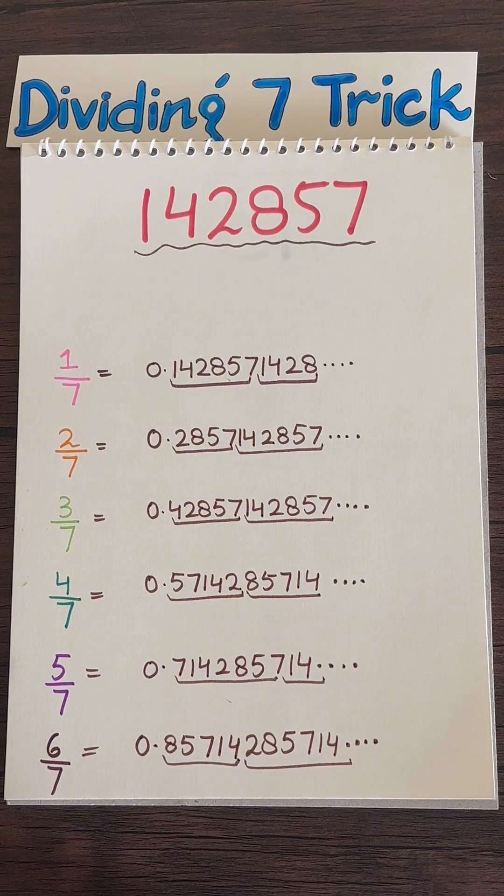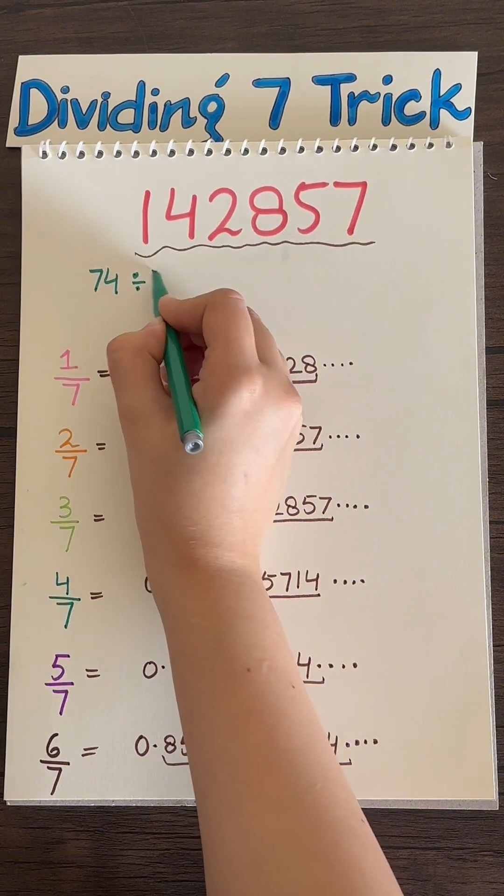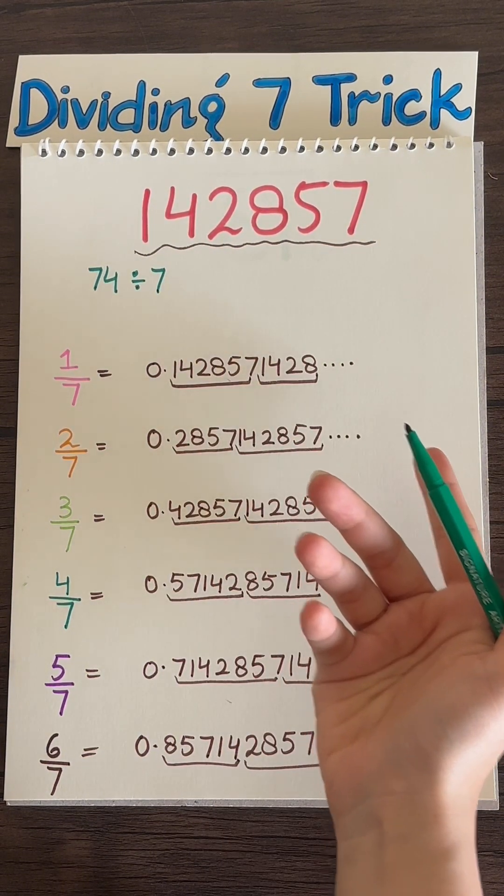Just remember where in the sequence the decimal part starts and you will be good to go. So if you take a number like 74 and divide it by 7, how would you know the decimal answer to this?